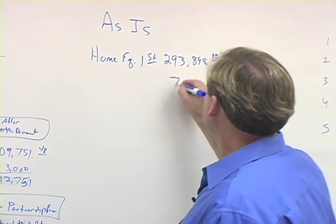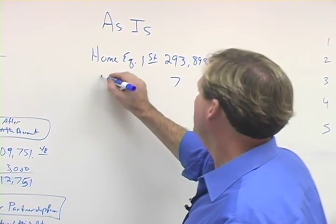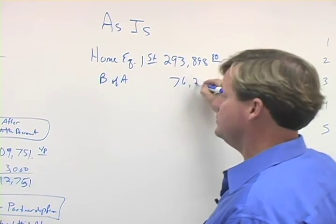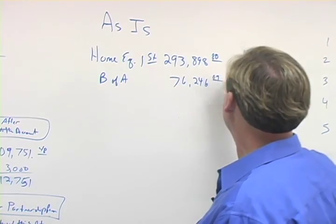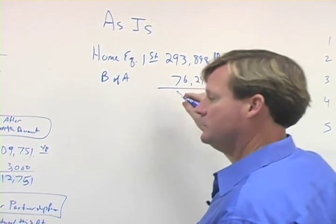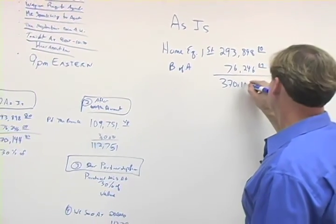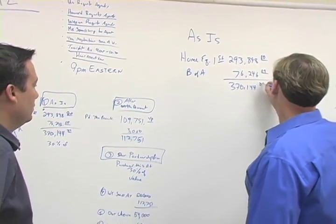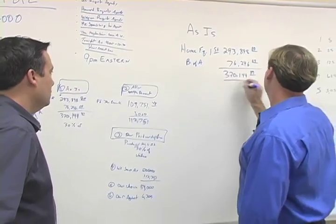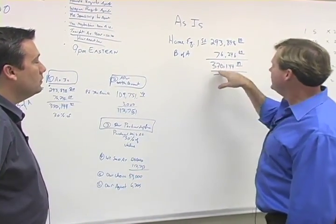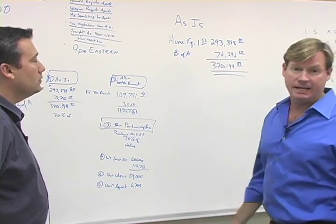The second mortgage on this deal was with B of A, Bank of America, and it was $76,246.09. I'm looking at my cheat sheet here just so I can remember the numbers, and I'm not going to do my math in my head because I don't do that very good in front of a camera. But here's the math, guys. When we came to this foreclosure deal, this pre-foreclosure deal, $370,144.89 in debt.